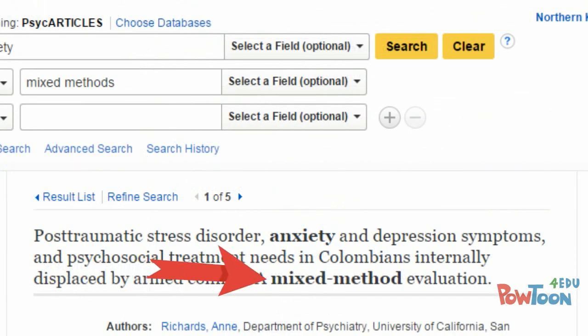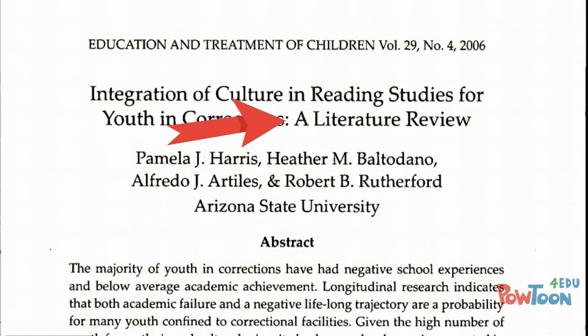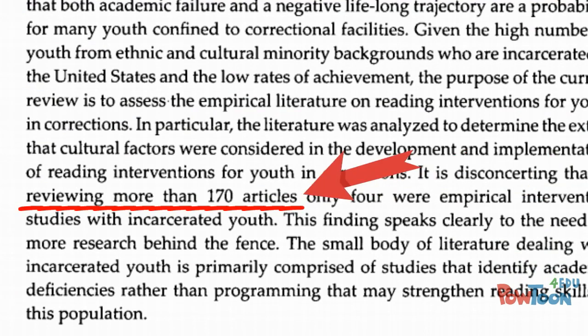Another type of article often found in scholarly journals is known as literature reviews. In a literature review, the author does not conduct their own original research experiment. Instead, the author reviews articles written by others and summarizes their findings.